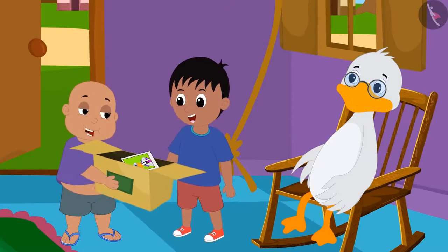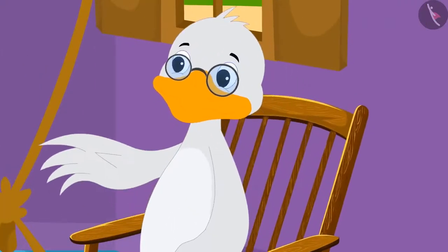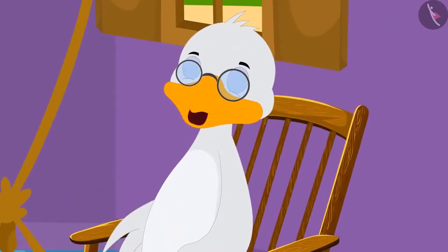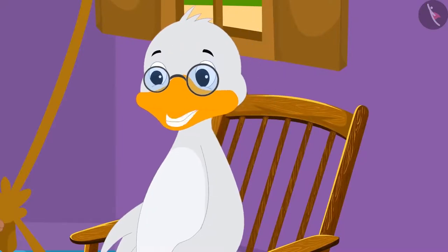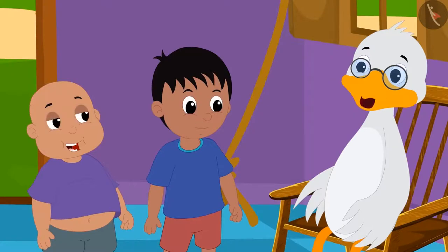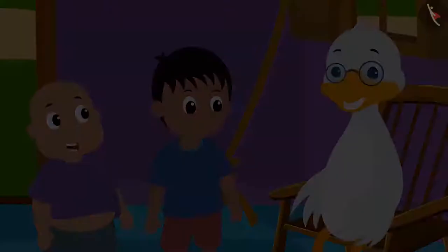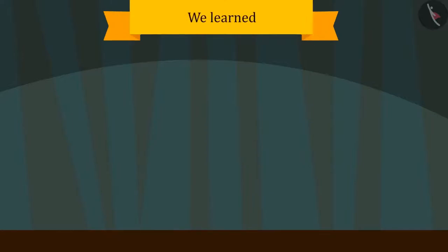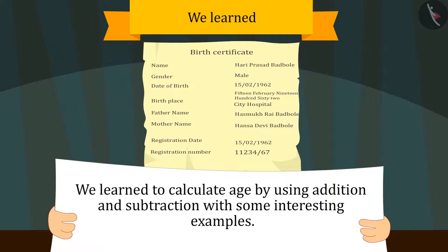Raju and Bablu enjoyed seeing old pictures of Uncle. Uncle told them that if they had some more time, he could tell them stories of his childhood. Raju and Bablu got excited, and then Uncle told them stories of his childhood. In this video, we learned to calculate age by using addition and subtraction with some interesting examples. In the next video, we will see some common mistakes related to it.